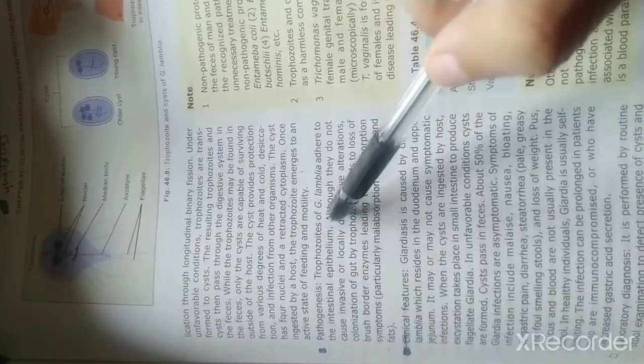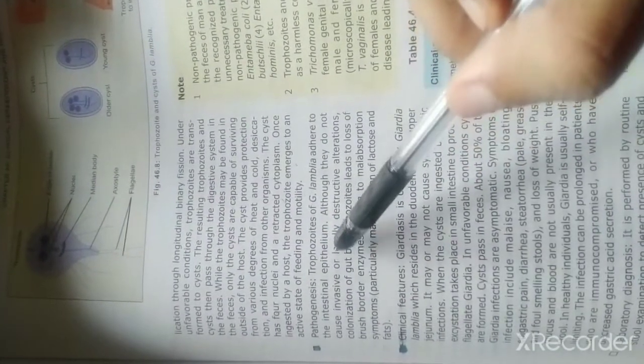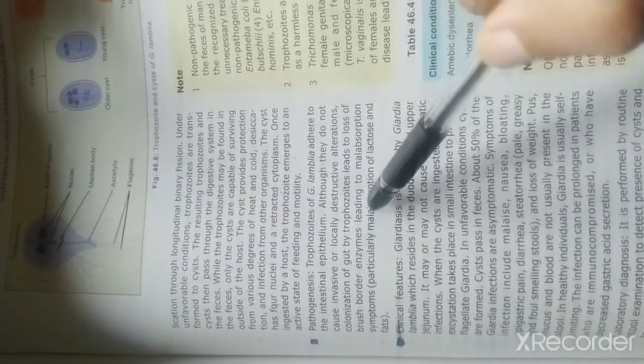Pathogenesis: The trophozoites of Giardia lamblia adhere to the intestinal epithelium, although they do not cause invasion or locally destructive infection. Colonization of the gut by trophozoites leads to loss of brush border enzymes, leading to malabsorption symptoms.